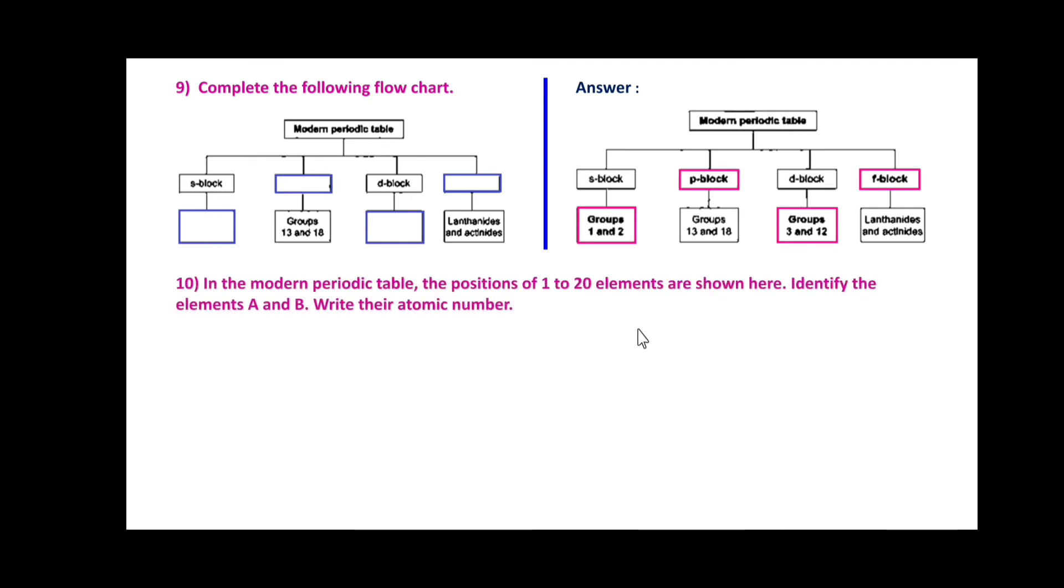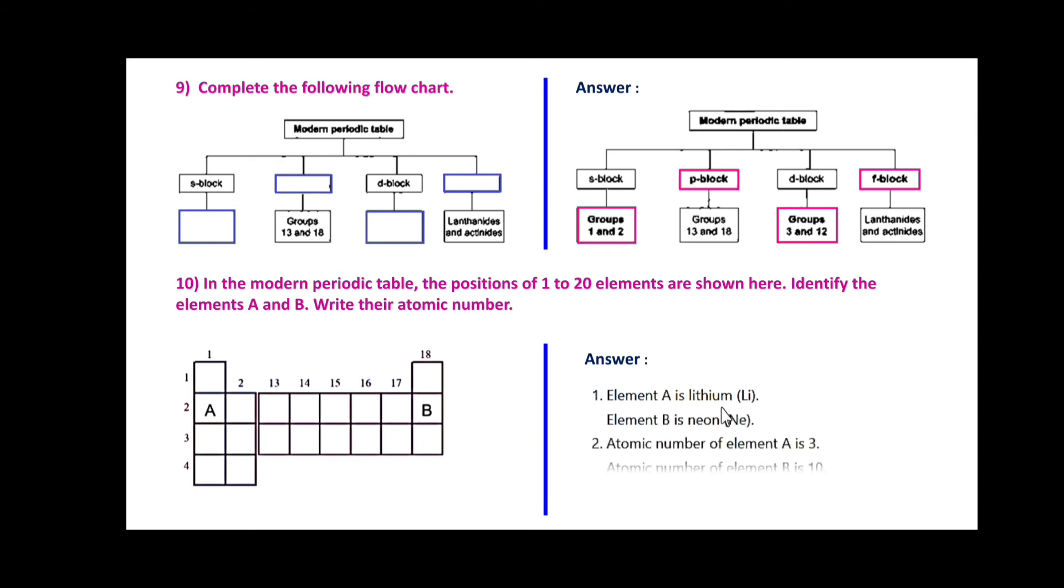In the modern periodic table, positions of 1 to 20 elements are shown. Identify elements A and B and write their atomic number. Element A is lithium and element B is neon. Atomic number of element A is 3 and atomic number of element B is 10.